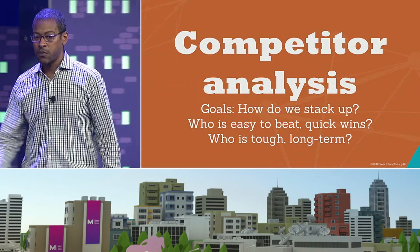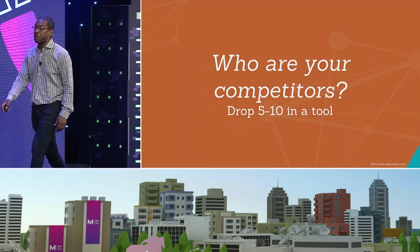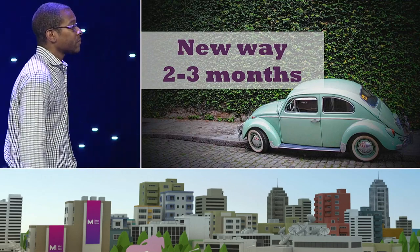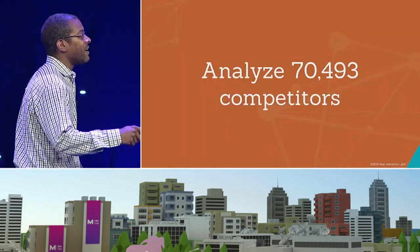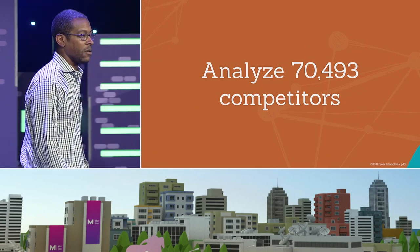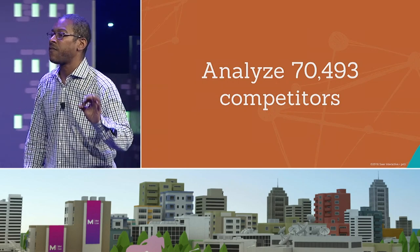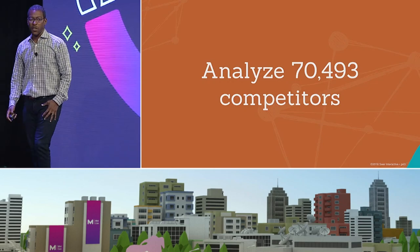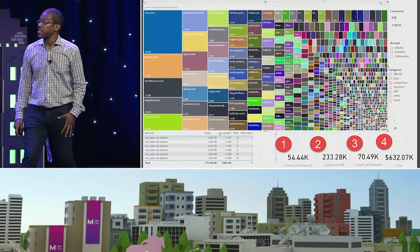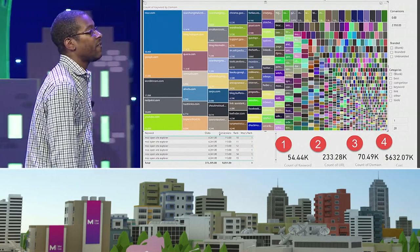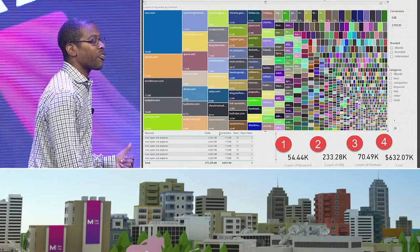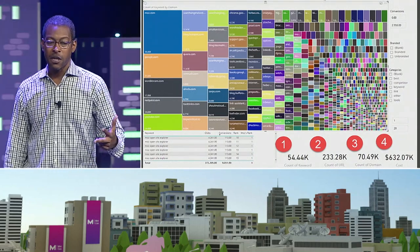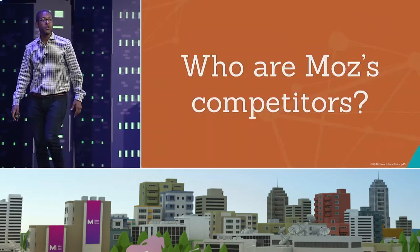Competitor analysis. Old way: I'd say to my client, 'Give me five or ten of your competitors,' drop them into a tool — horrible. New way: I analyzed 70,493 different competitors for Moz. They have 700,493 unique domains ranking in the top 20 for keywords they spent money on last year. Notice at the bottom: 54,000 words, 233,000 URLs, 70,000 domains.